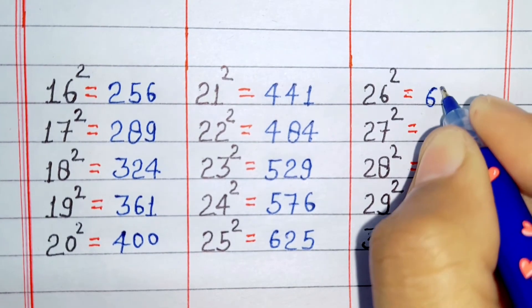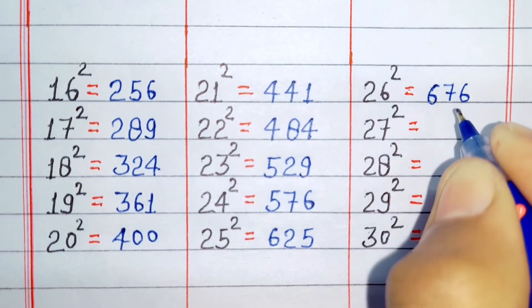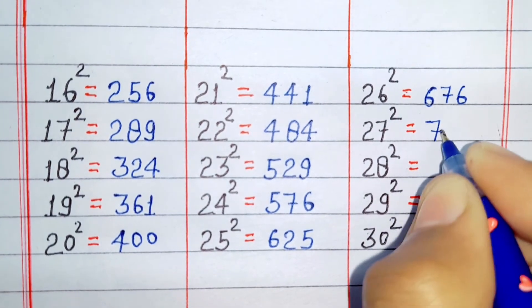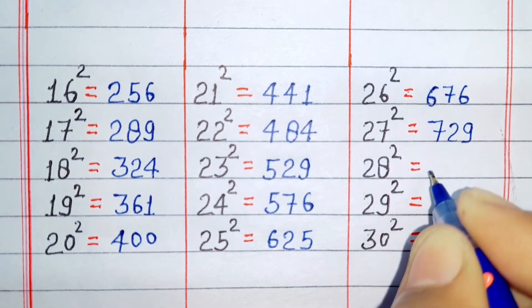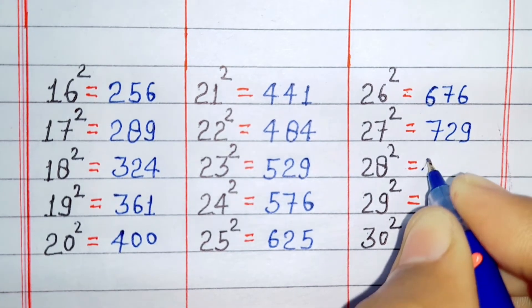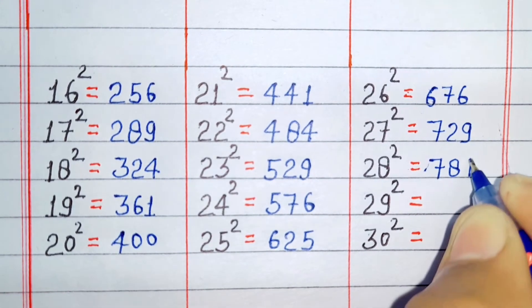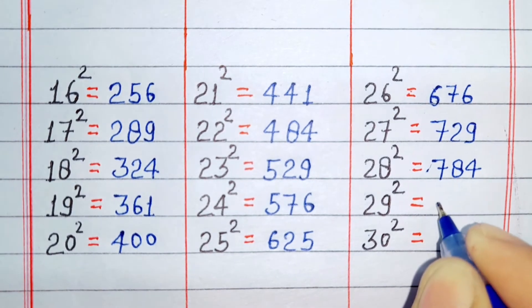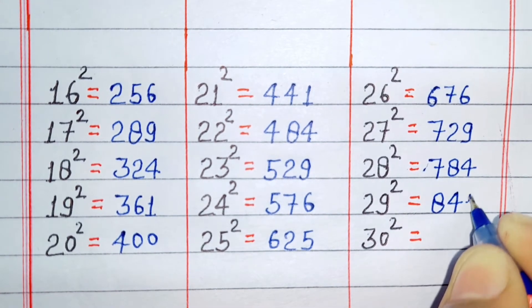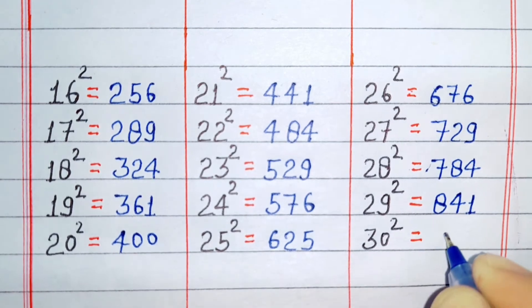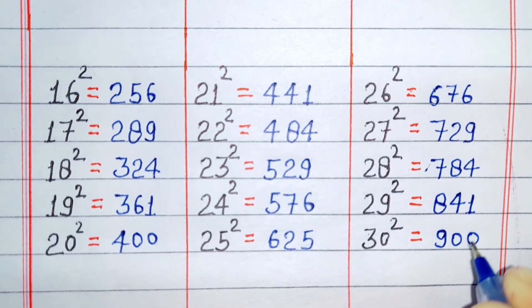Square of 26 is 676. Square of 27 is 729. Square of 28 is 784. Square of 29 is 841. Square of 30 is 900.